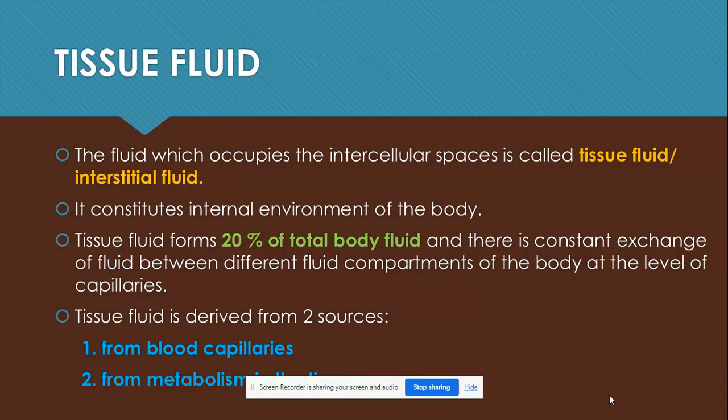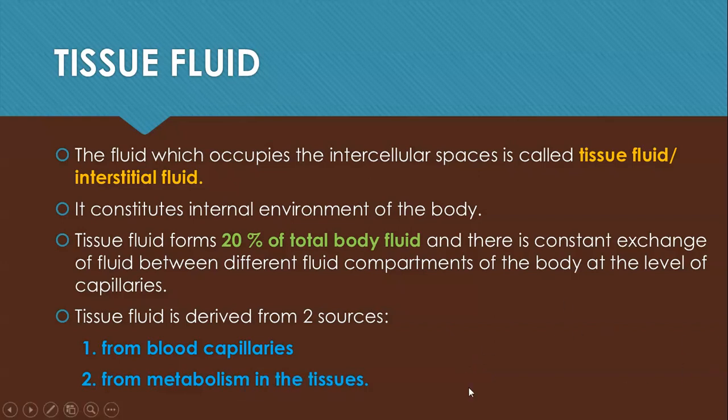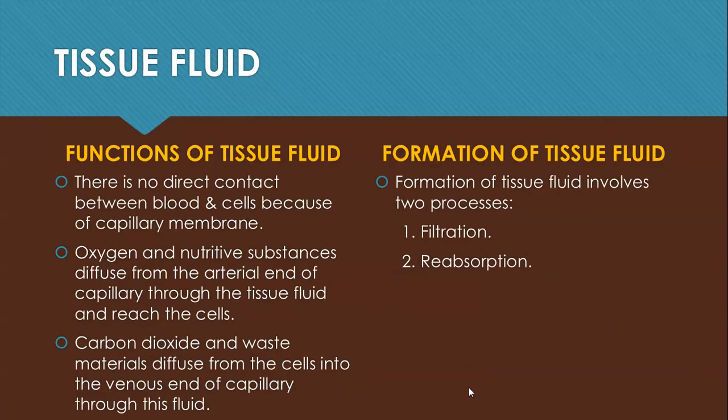How is tissue fluid formed? There are two sources: first, from blood capillaries, and second, from metabolism of the tissues — the metabolic waste products from the tissues. Tissue fluid is formed by two processes: filtration and reabsorption.